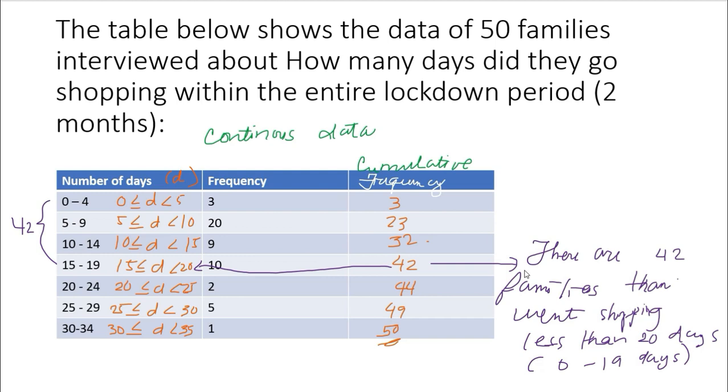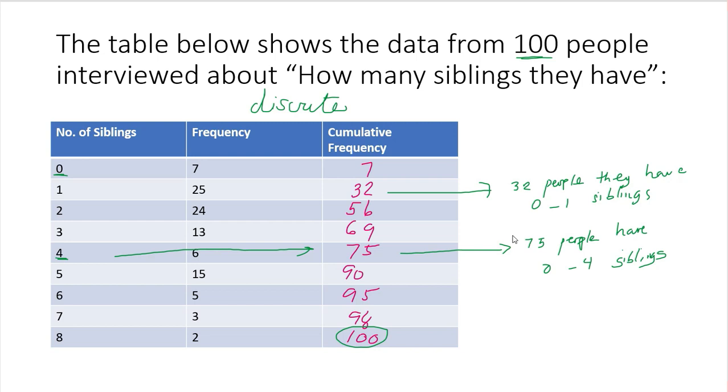This is the use of cumulative frequency. Let's go back to the other example earlier. So you could also say here, 75 people have less than 5 siblings. So meaning to say they have 0 to 4 siblings. So you could use less than 5 siblings. So that is the same meaning. So you have to, if it's discrete, you have to look back at the next number and you say it's less than that. Right, so that's the use of our cumulative frequency table.